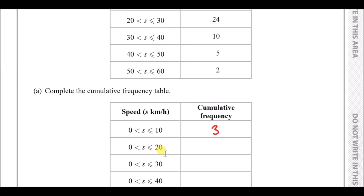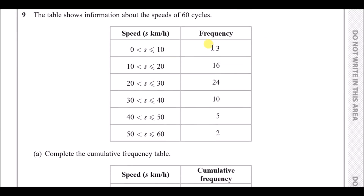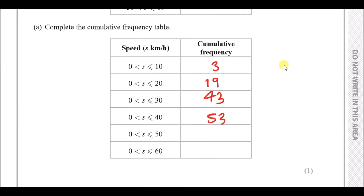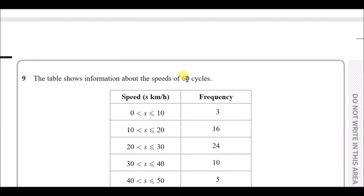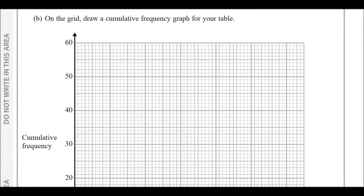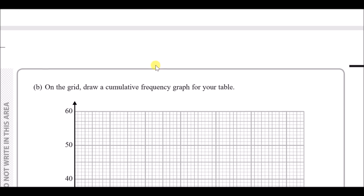Filling in the cumulative frequency: 0–10 stays at 3. Add the next group: 3 + 16 = 19 for 0–20. Then 19 + 24 = 43 for 0–30. Then 43 + 10 = 53, then 53 + 5 = 58, then 58 + 2 = 60. This confirms all 60 cyclists are included.